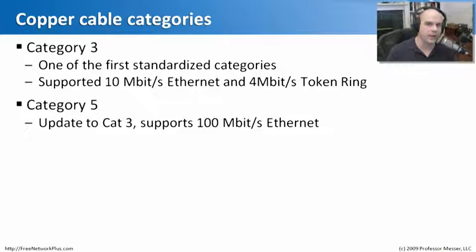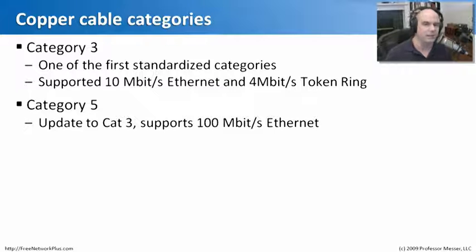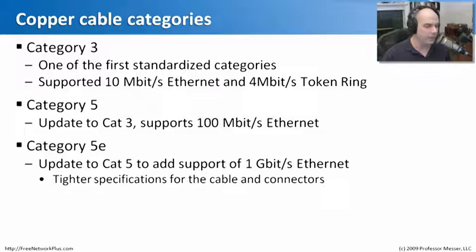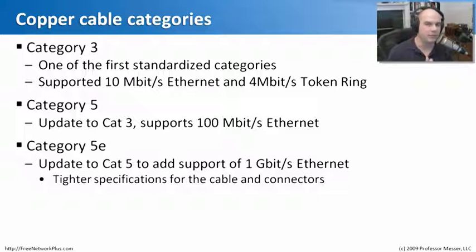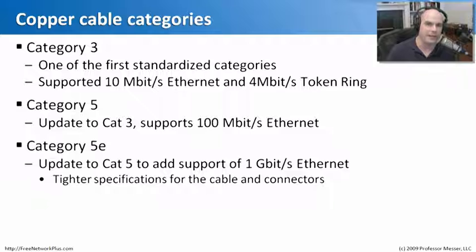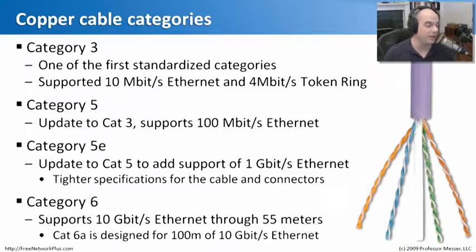We quickly outgrew Category 3 and moved to Category 5, which was built because we needed higher speeds — specifically 100 megabit Ethernet over unshielded twisted pair. We soon found we needed faster still, so it's really hard to find just Cat 5 cable today. Usually you find Category 5e, which is an upgrade that allows 1 gigabit Ethernet throughput through a single twisted pair cable. Very tight specifications for both the cable and the connectors. Category 5e allows speeds up to 1 gigabit per second, and most people put in Cat 5e these days.